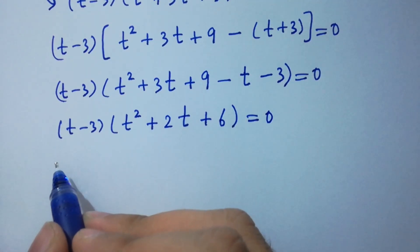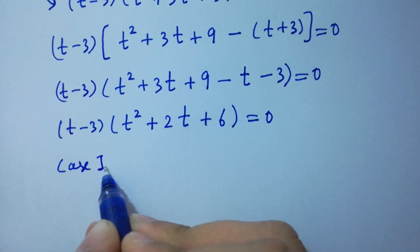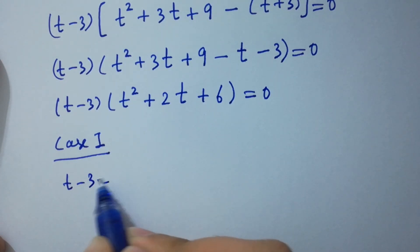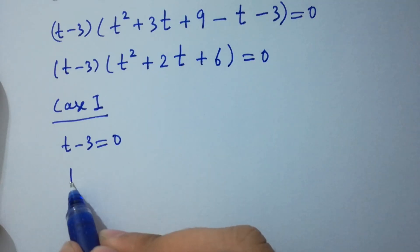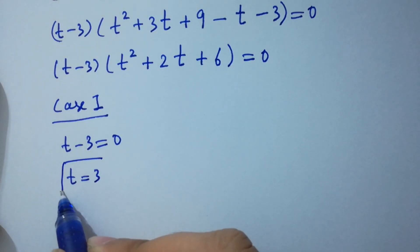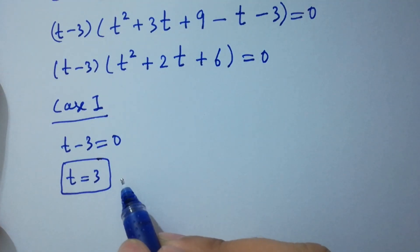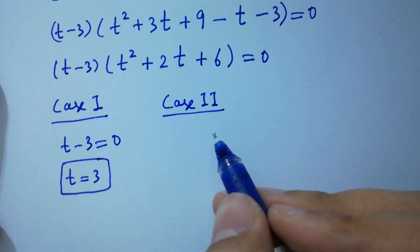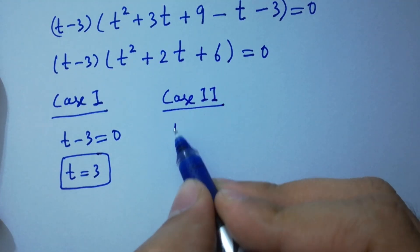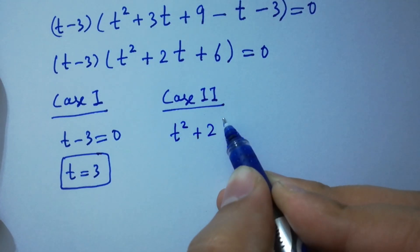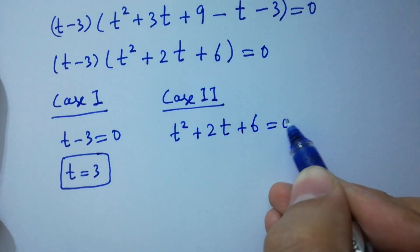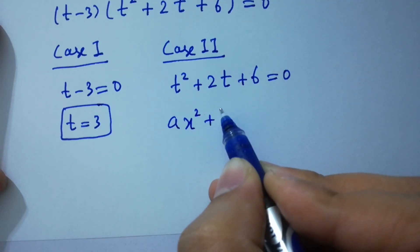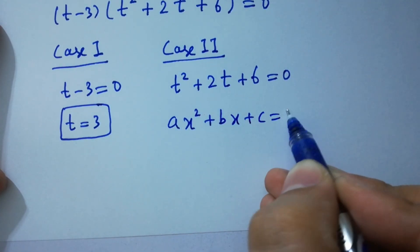Either case one: t minus 3 equal to 0, where we get t equal to 3, the value of t which is the real solution. And in the second case we have t square plus 2t plus 6 equal to 0, which is a quadratic equation of the form ax square plus bx plus c equal to 0.